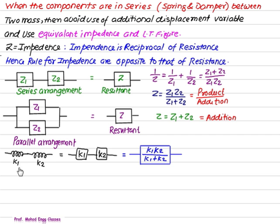Suppose we have the two spring in series, so we require one variable in between them to define the motion completely. And you want to avoid this, you simply write K1 in the impedance form, K2 in the impedance form. Now, this figure is almost the same as the series arrangement. So, here we have the rule. The resultant impedance will be product upon the addition. Product is K1 into K2 and the denominator is addition, that is K1 plus K2.